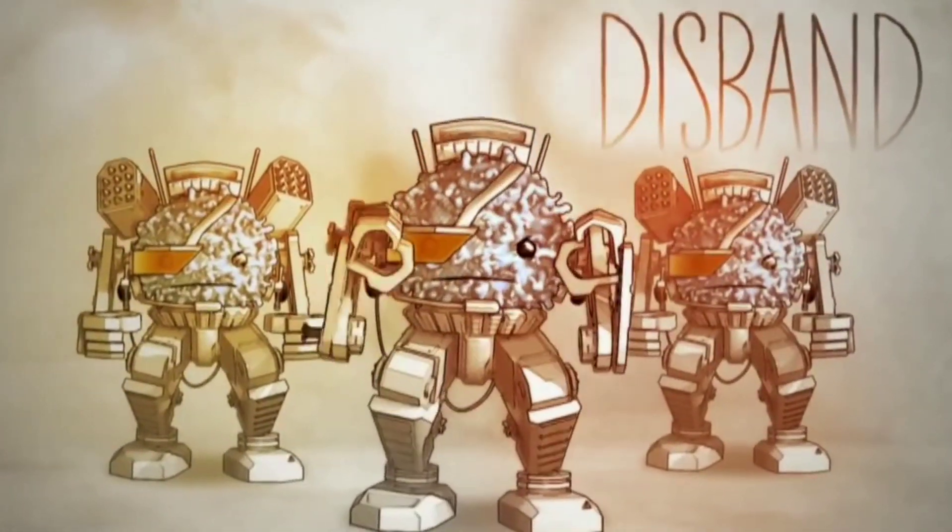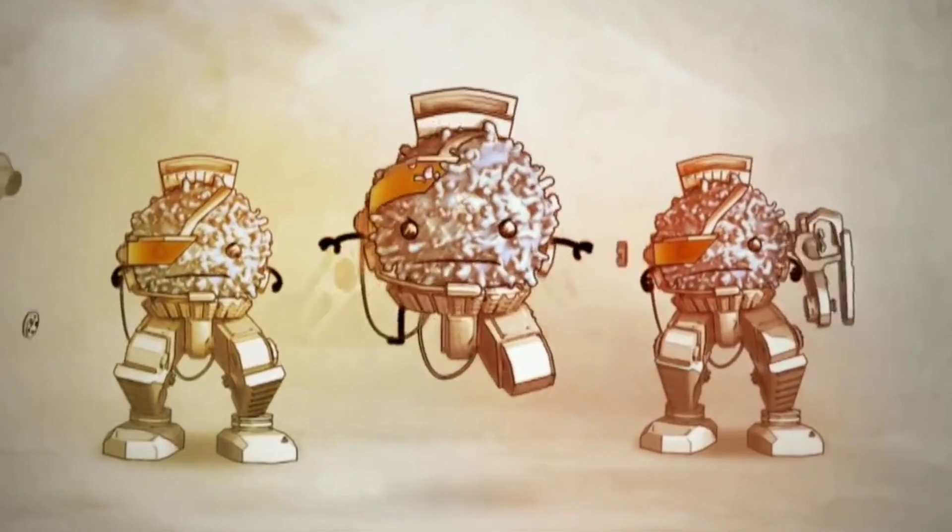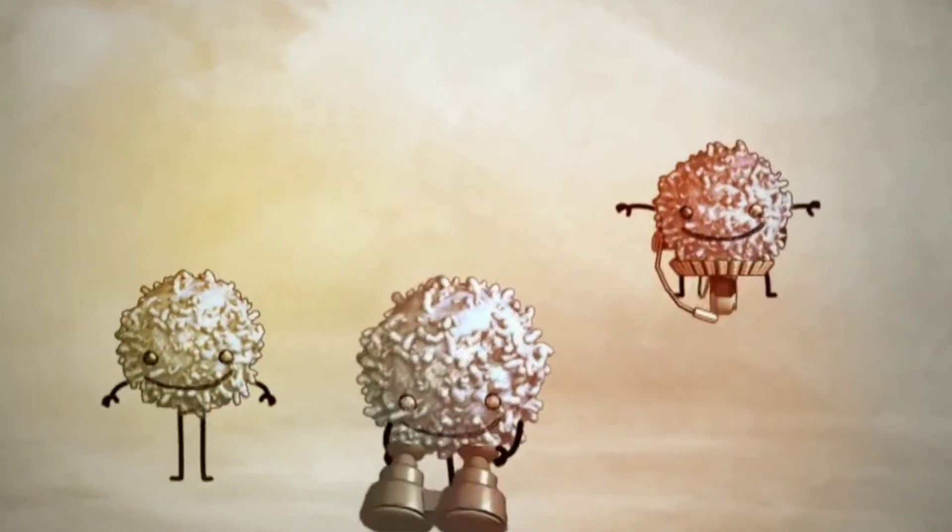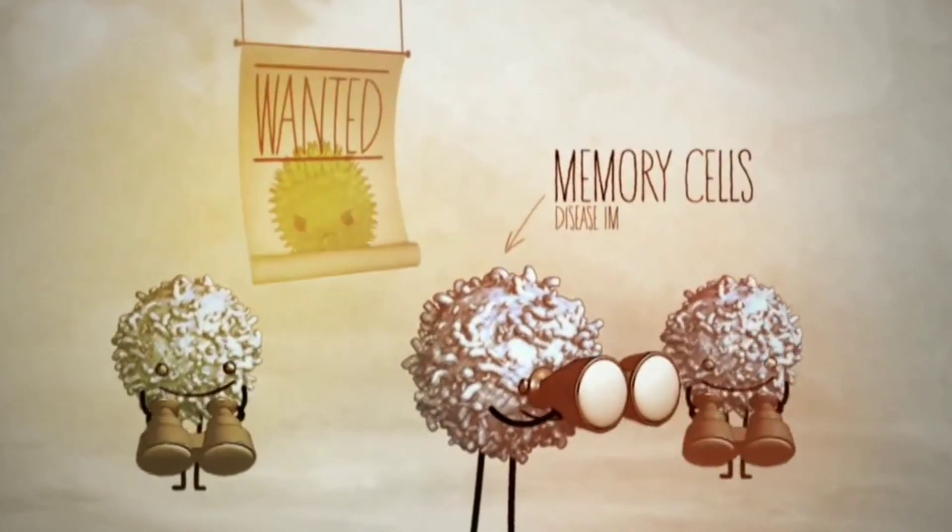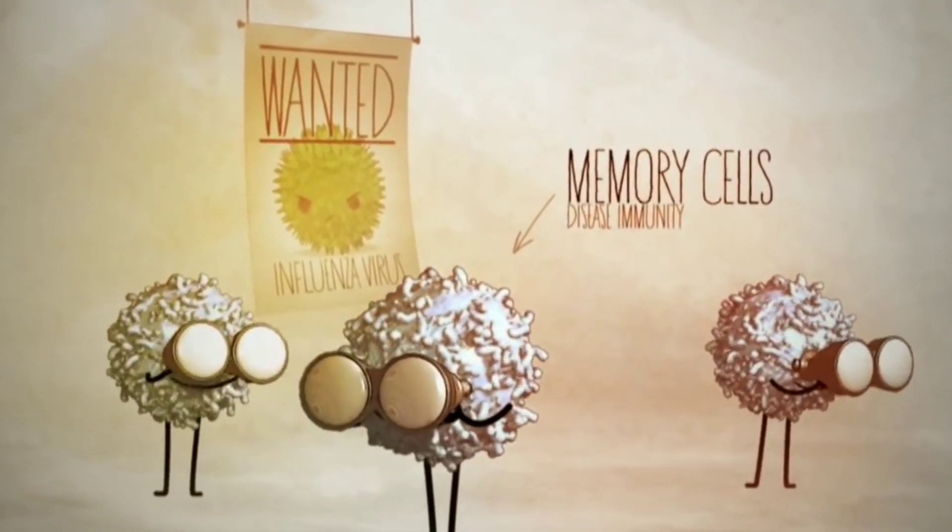Once the germ is removed, the immune army can disband. But they leave behind memory cells, which will remember the invader. So the next time, the response would be mounted instantly. This makes us immune to the germ.